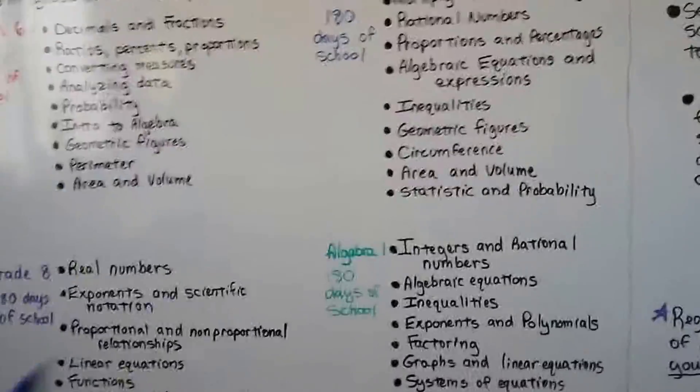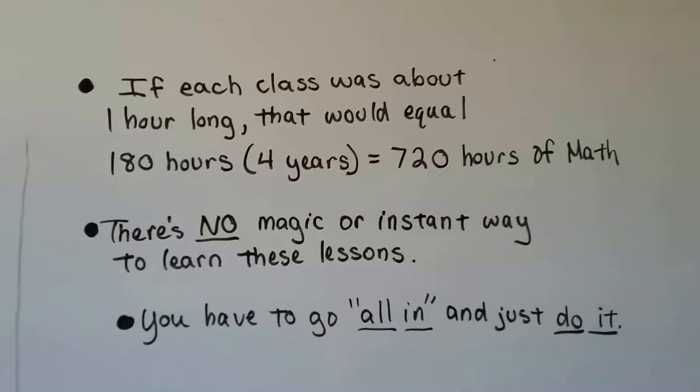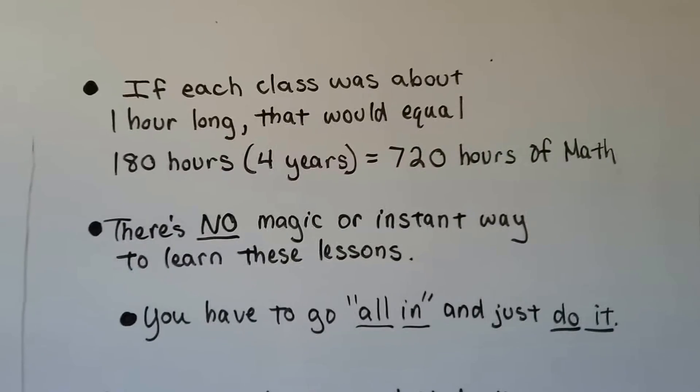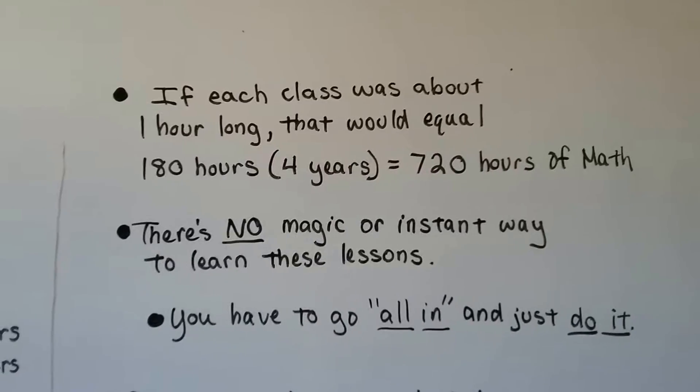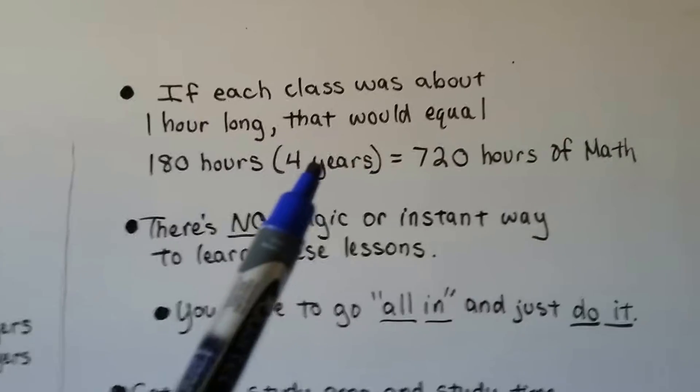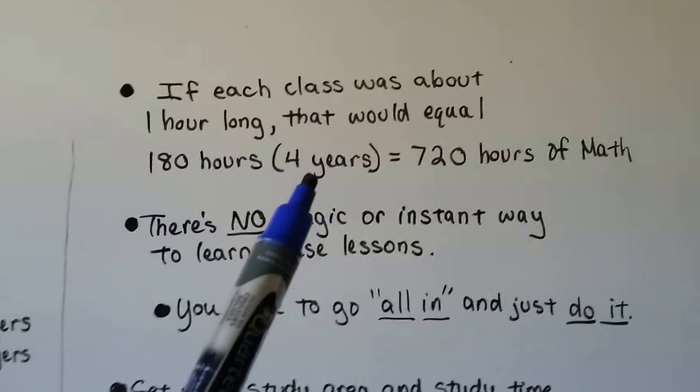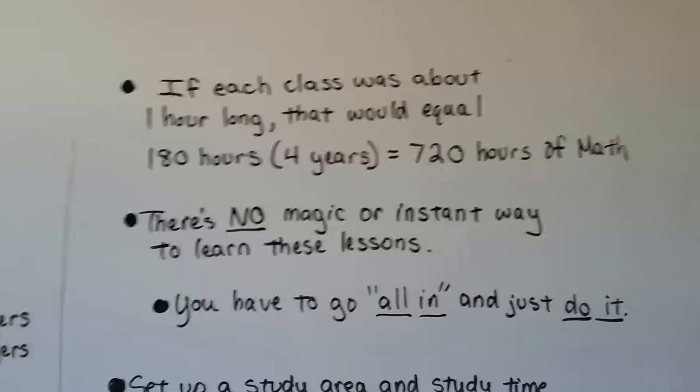So each of these are 180 days of school. Now, if each class was about an hour long, because they're what, 40, 50 minutes for a class, we can round it off to an hour. It's not counting homework, but that 180 hours for each grade times those four grade years, sixth, seventh, eighth, and then freshman year high school, that's 720 hours of math.